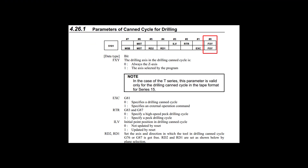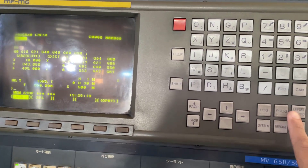It looks like the machine keeps the drilling canned cycle but only does Z-axis movement. So I checked this parameter and bit 0 again on the machine and saw it was still 0. That means we can only use the Z axis for drilling — we cannot drill along the X or Y axis if we use a canned cycle. So we need to change this bit to 1, and the tooling axis will be selected by the program.